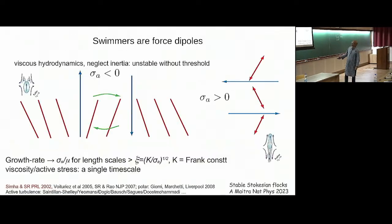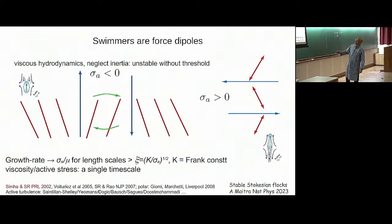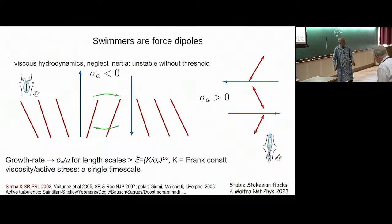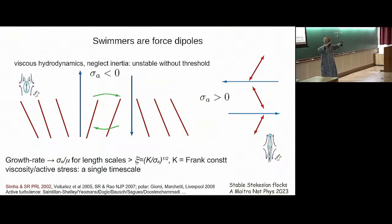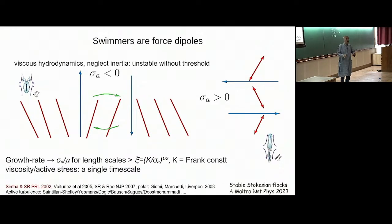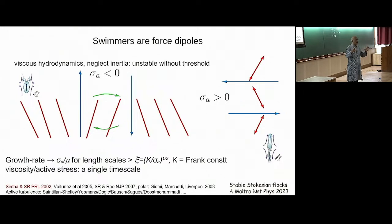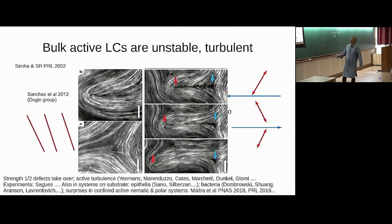What I showed was that an aligned state of swimmers is invariably unstable if the fluid's response can be described by the Stokes equation — that is, where forces everywhere produce flows everywhere instantly. That means you can't have, in a bulk liquid, an active ordered liquid crystalline state on big scales.